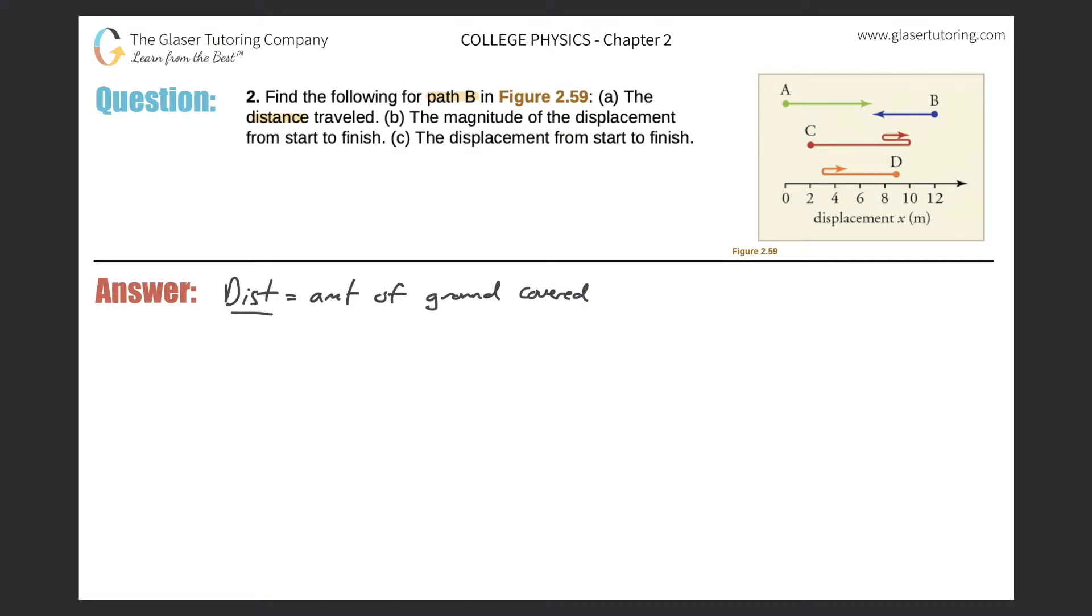It looks like B is starting at 12, and it's ending at about—if I were to draw a little line down there—looks like it's ending at about 7. That should be about 7 meters there and that's 12 meters.